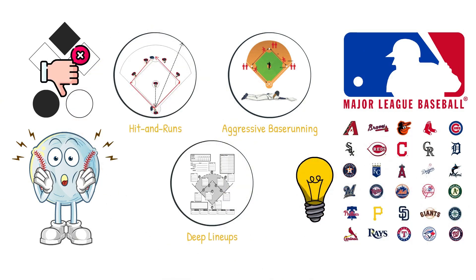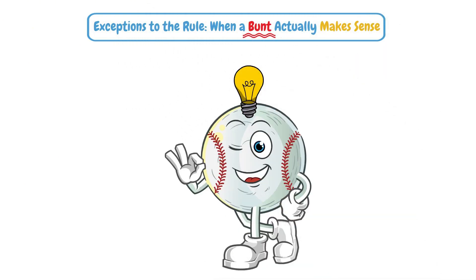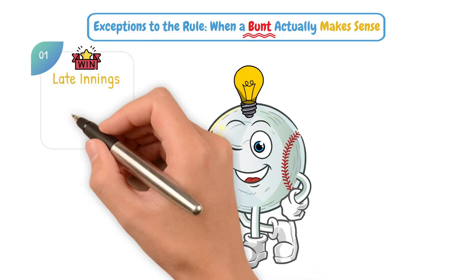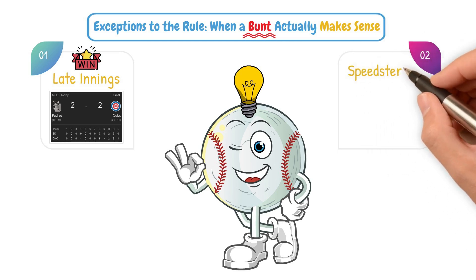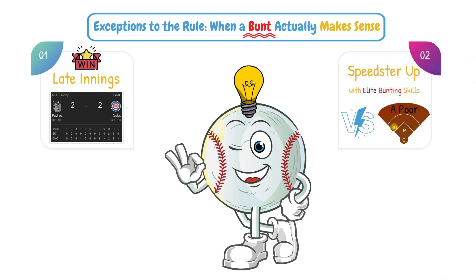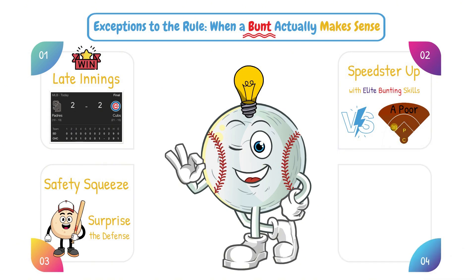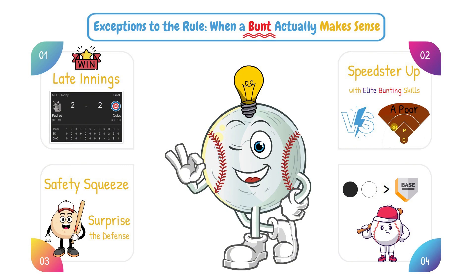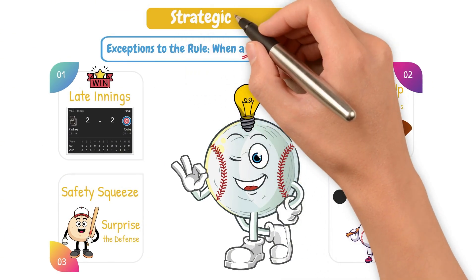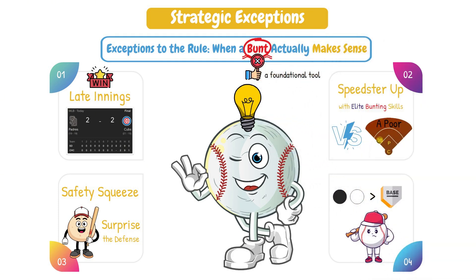To be fair, there are a few situations where bunting can still be the smart play. First, late innings in a must-win tie game where you just need a single run. Second, a speedster with elite bunting skills versus a poor defensive third baseman. Third, safety squeeze or drag bunts used to surprise the defense. Or fourth, if the hitter has a higher chance of getting out than getting on base. These are strategic exemptions, not everyday plays. The bunt is no longer a foundational tool — it's a surgical instrument used in very specific situations.